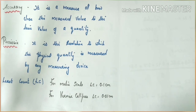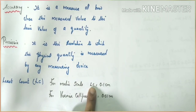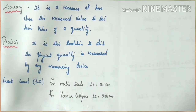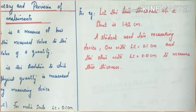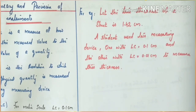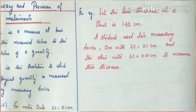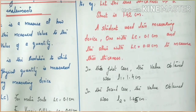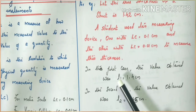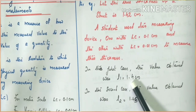The reading obtained using vernier calipers is more precise than that using a meter scale because meter scale has a least count of 0.1 centimeter and vernier calipers has 0.01 centimeter. As least count decreases, precision increases. For example, let the true thickness of a sheet be 1.42 centimeter. A student used two measuring devices — one with least count 0.1 centimeter, like a meter scale, and another with least count 0.01 centimeter, like a vernier scale — to measure the thickness.